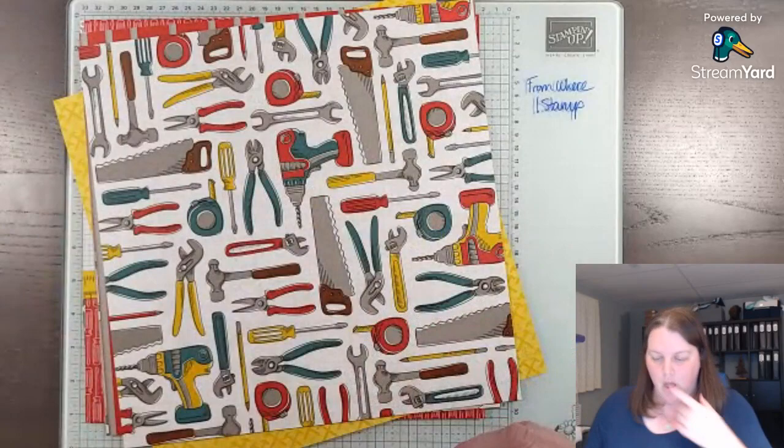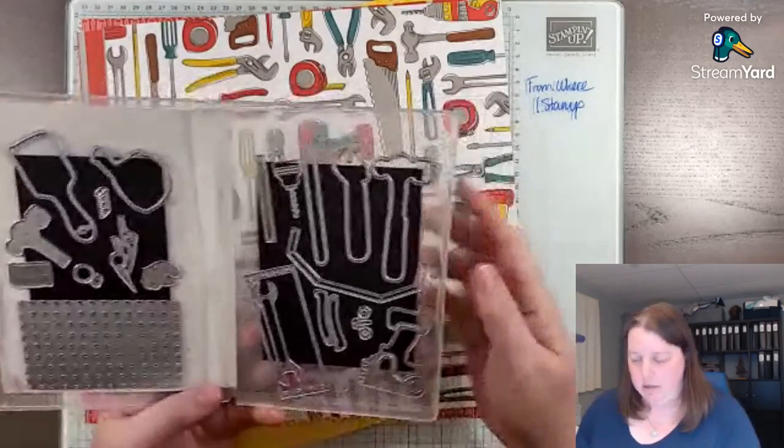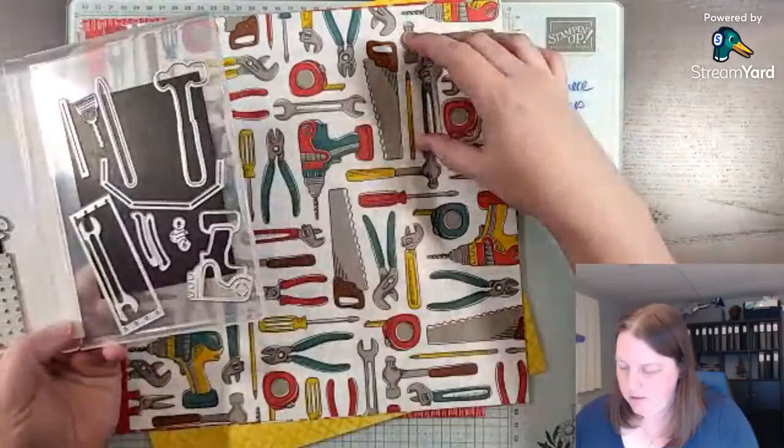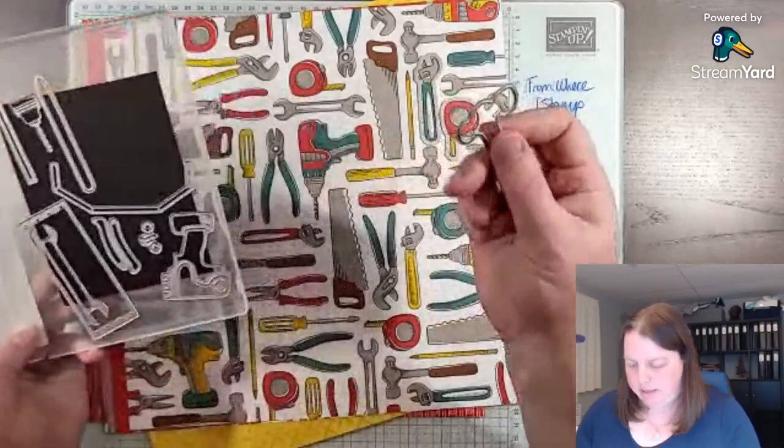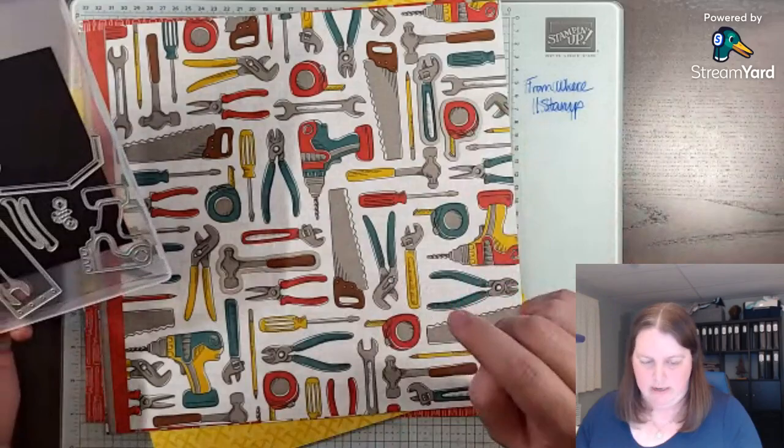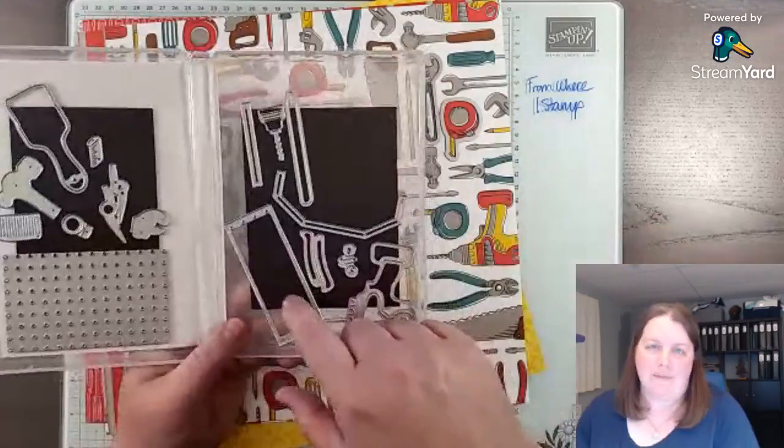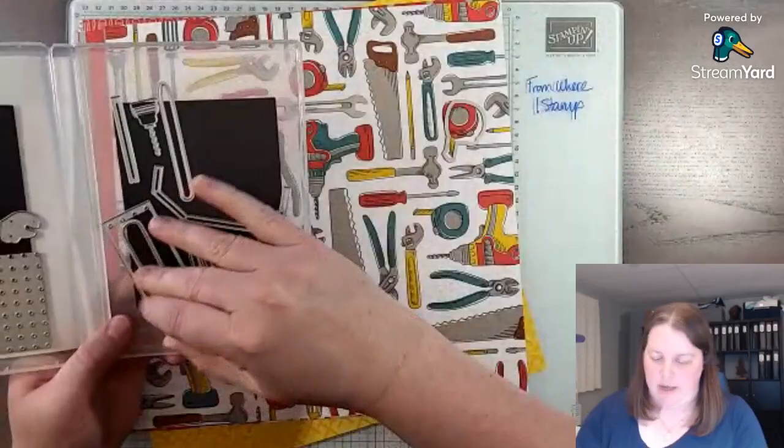So some of these dies will cut out some of these items. So like the tape measure is one. The wrench. Now the hammer is a little different, but it does cut out this one. So even if you just get the dies and maybe something else that will get you above 60, then I would definitely get these dies, this designer series paper, because they coordinate together.